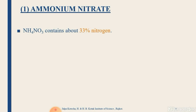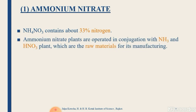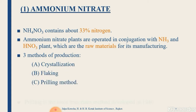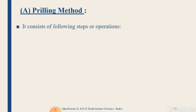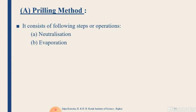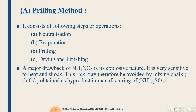The first synthetic nitrogenous fertilizer is ammonium nitrate, which contains about 33% nitrogen. Ammonium nitrate plants are operated in conjunction with ammonia and nitric acid plants, which are the raw materials for its manufacturing. There are three methods of production: crystallization, flaking, and prilling. The most important method, developed in 1940, is the prilling method, which consists of four steps: neutralization, evaporation, prilling, and drying and finishing.